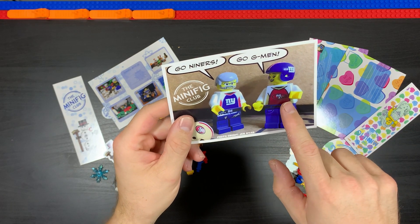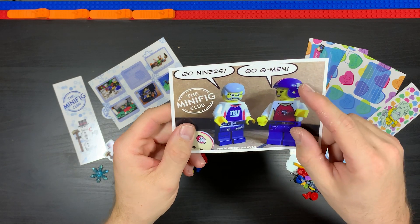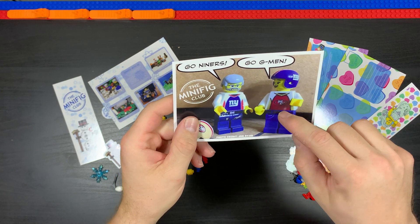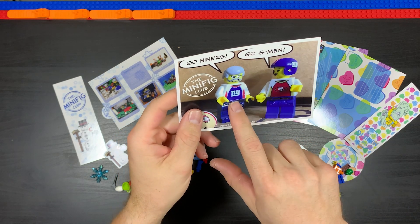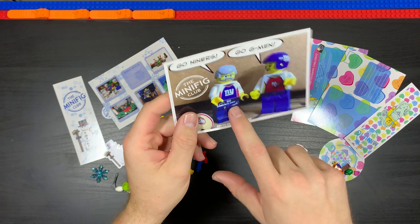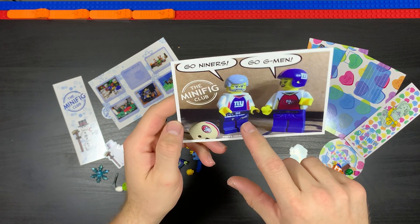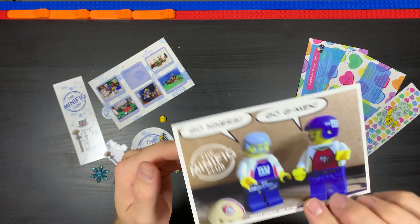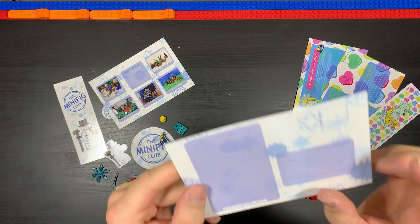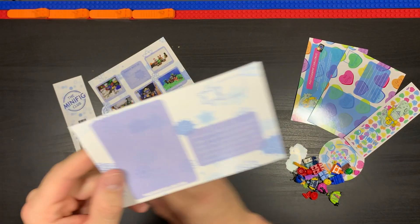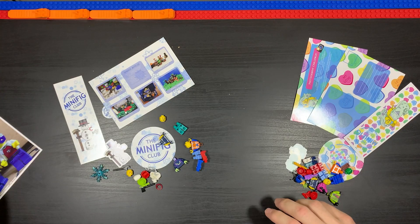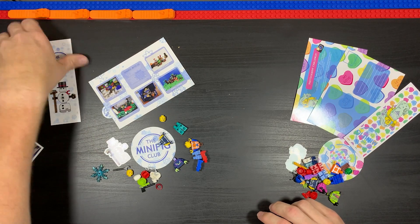He's saying go G-men, which is the New Jersey Giants, but he's wearing San Francisco. This guy's saying go Niners but he's wearing New Jersey Giants football attire. There's the postcard. If you ever want to check them out, go to minifigclub.com. In January looks like winter is kind of the theme.